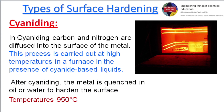Cyaniding. In cyaniding, carbon and nitrogen are diffused into the surface of the metal. This process is carried out at high temperatures in a furnace in the presence of cyanide-based liquids. After cyaniding, the metal is quenched in oil or water to harden the surface. Temperature: 950 degrees Celsius.